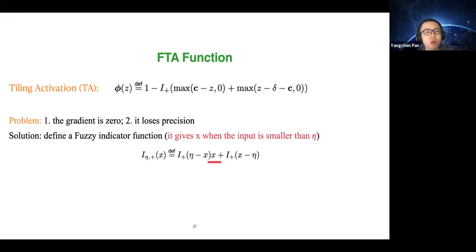There are two problems with this activation function. First, the gradient is zero, so it is not compatible with backpropagation networks. Second, it loses precision because you turn continuous values to binary zero/one values.